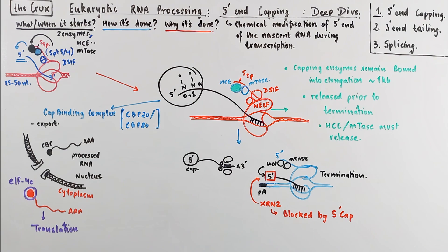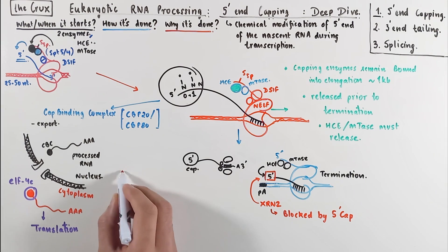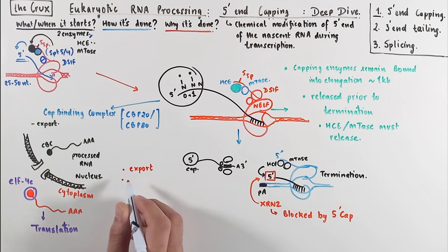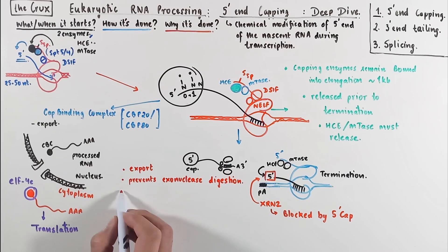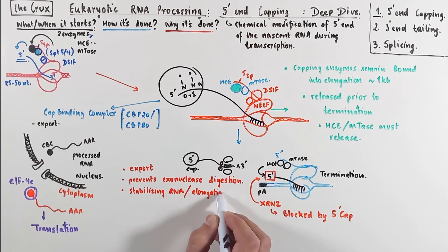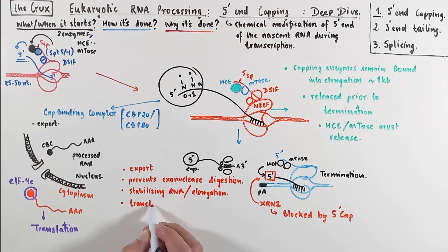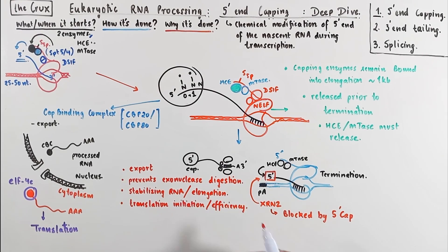So to sum up our discussion, the capping is important for the following reasons. It is important for the export of the RNA. It prevents the RNA from exonucleus digestion. It stabilizes the RNA. And it signals the promoter proximally paused polymerase to go into elongation. And we just also saw that it is required for an efficient translation initiation.